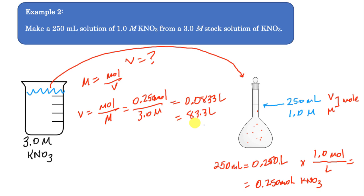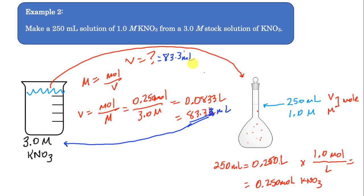The calculation gives a volume of 83.3 milliliters of the concentrated stock solution. Be careful: this number represents the volume of stock solution you pour in, not the final solution volume. Remember the molarity equation gives liters, so convert to milliliters. Once I pour in those 83.3 mL, it still has a concentration of 3 molar — it's not diluted yet.